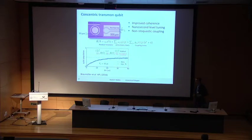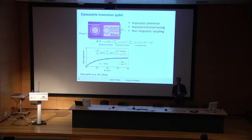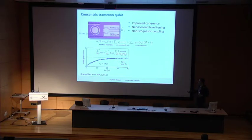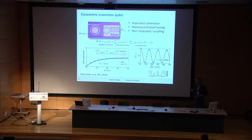We can also measure T2, which is on the order of a few microseconds. If we perform a Hahn echo measurement we get about 10 microseconds. We can also show that we have good control on the phase of our qubit.